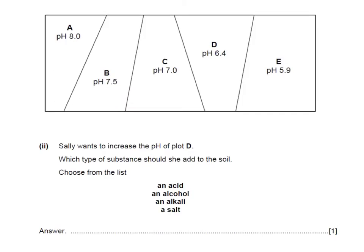Sally wants to increase the pH of plot D. Well here's plot D with a pH of 6.4. Which type of substance should she add to the soil? Choose from the list. Well if she has an acidic soil and wants to increase the pH, she needs to add an alkali. So the answer here is alkali.